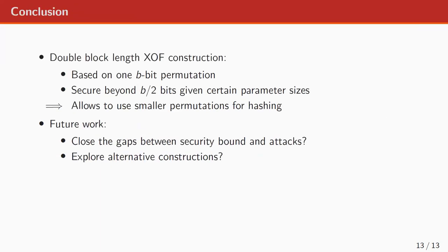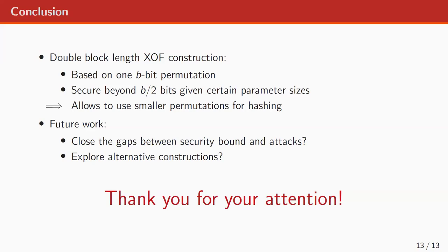To conclude: we have a double block length sponge construction that can be secure beyond the birthday bound in the permutation size for certain parameter sizes. It tells us among others that it's possible to use a smaller permutation for hashing. For future work, we see two directions: trying to close the gap between the security bound and the attacks, or exploring alternative constructions that are not necessarily sponge-based. That's it for my talk — thank you for your attention.